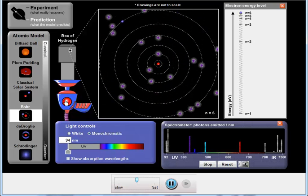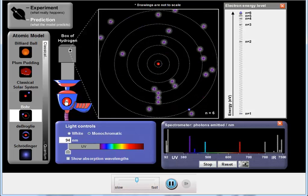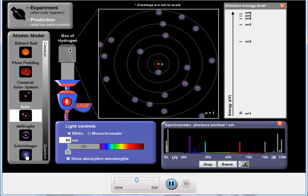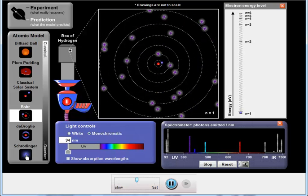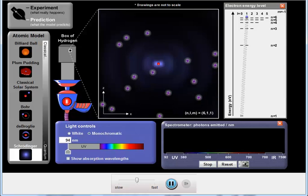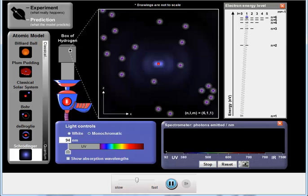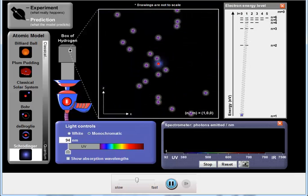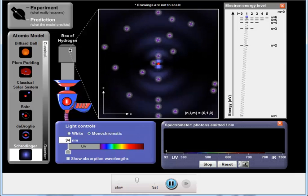Before we turn off the gun, why don't we take a look at what it would look like if we were looking at it in terms of the Schrödinger model, which is the modern quantum mechanical model. What we have here are regions of space occupied by the electron, and that region of space is called an orbital.